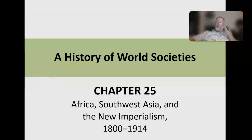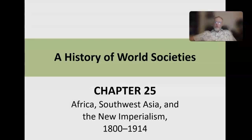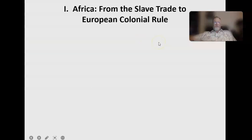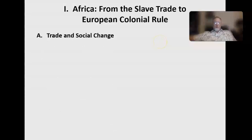Welcome to Chapter 25. A lot of this chapter has been on Africa and Southwest Asia. We're going to look at a new type of imperialism that develops. This is now post-colonialism — colonialism from the 15th to the 18th and into the 19th century, the 1800s. We're really in a post-colonial period. It's a different type of imperialism; it's global. We'll also look at the global economy. Africa from the slave trade to European colonial rule: trade and social change.